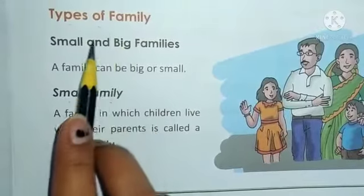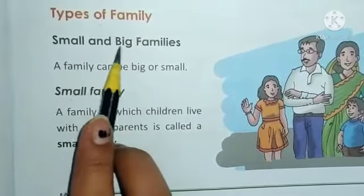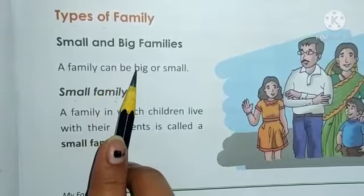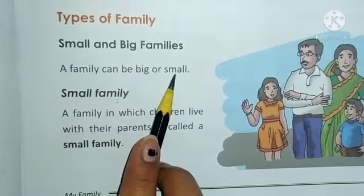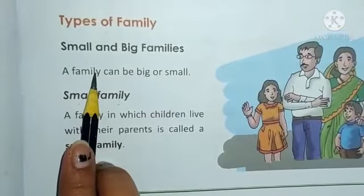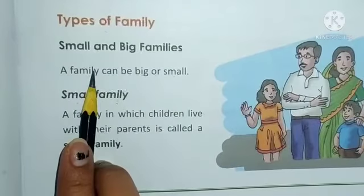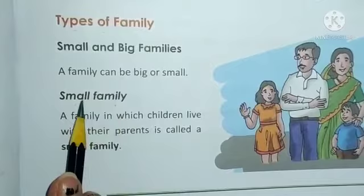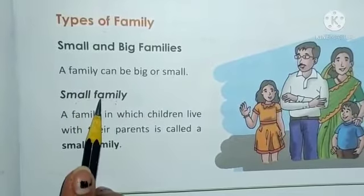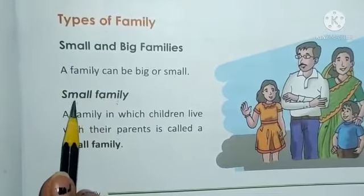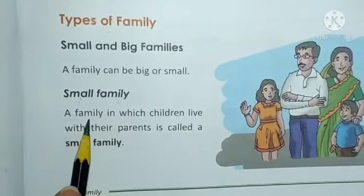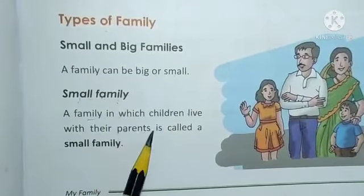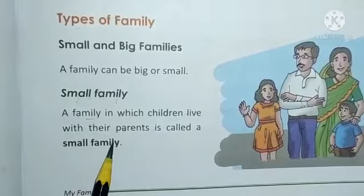Types of a family: small and big families. A family can be big or small. There are two types of families — small and big family. Firstly, I will tell you what is a small family. A family in which children live with their parents is called a small family.